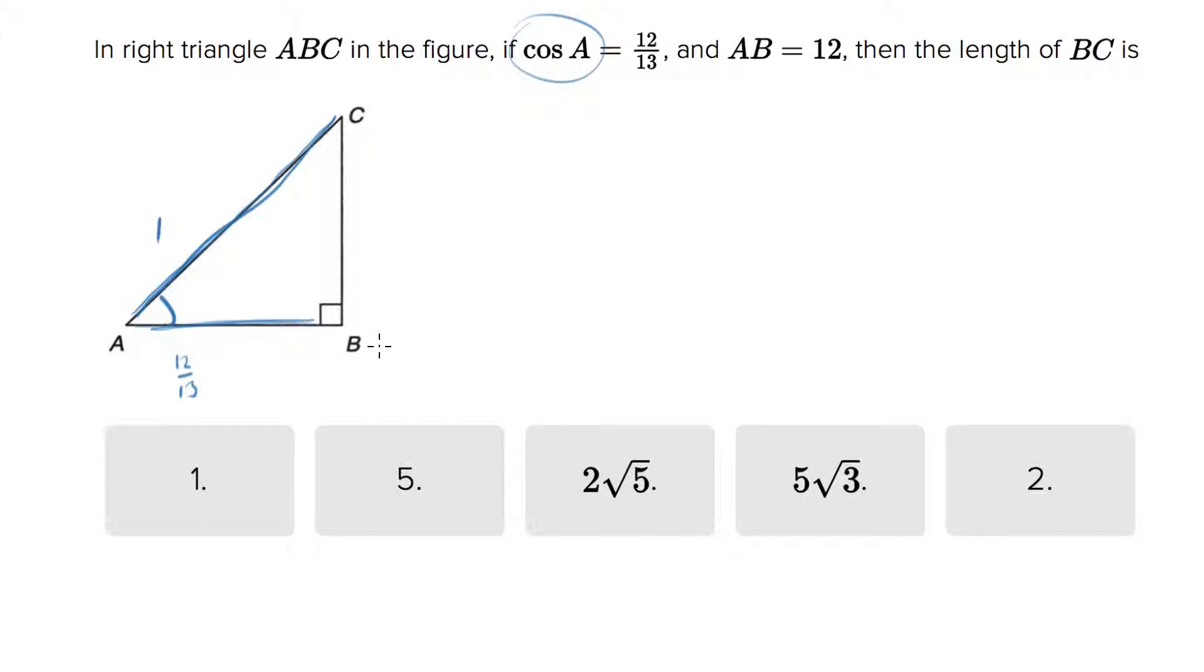Now if they tell us AB is 12, then we know that this must be 13, because this is 12/13ths of that.